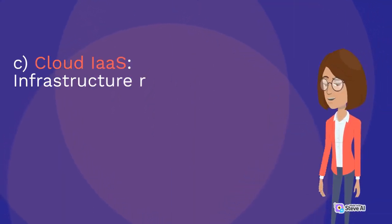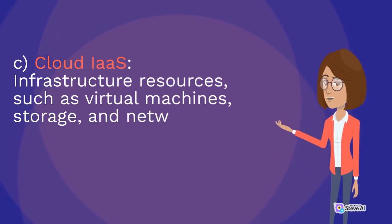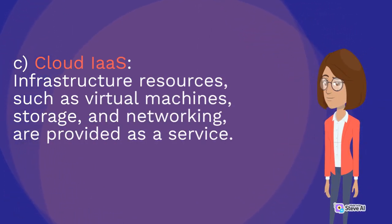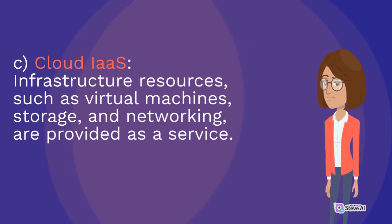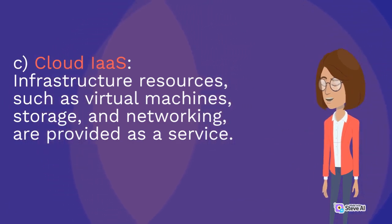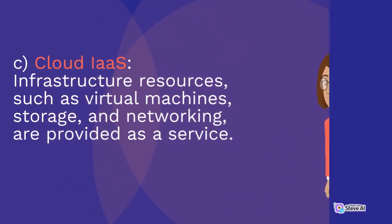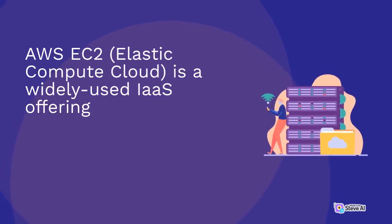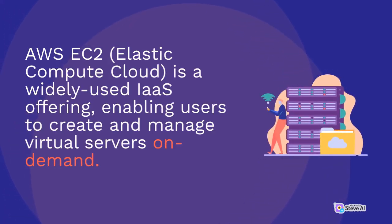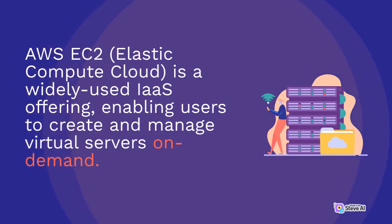C: Cloud IaaS (Infrastructure as a Service). Infrastructure resources such as virtual machines, storage, and networking are provided as a service. AWS EC2 (Elastic Compute Cloud) is a widely used IaaS offering, enabling users to create and manage virtual servers on demand.